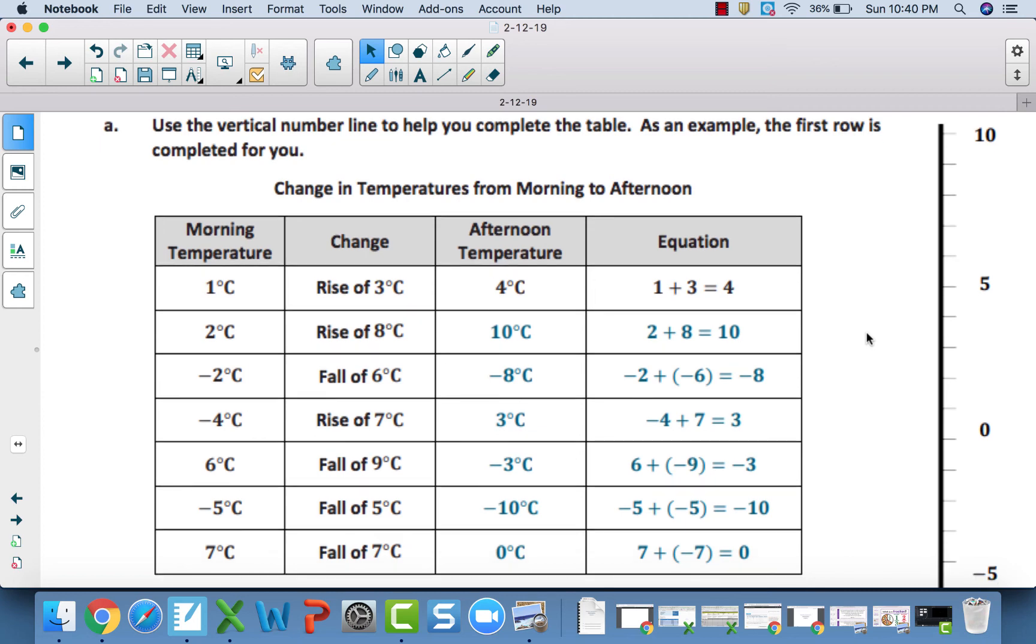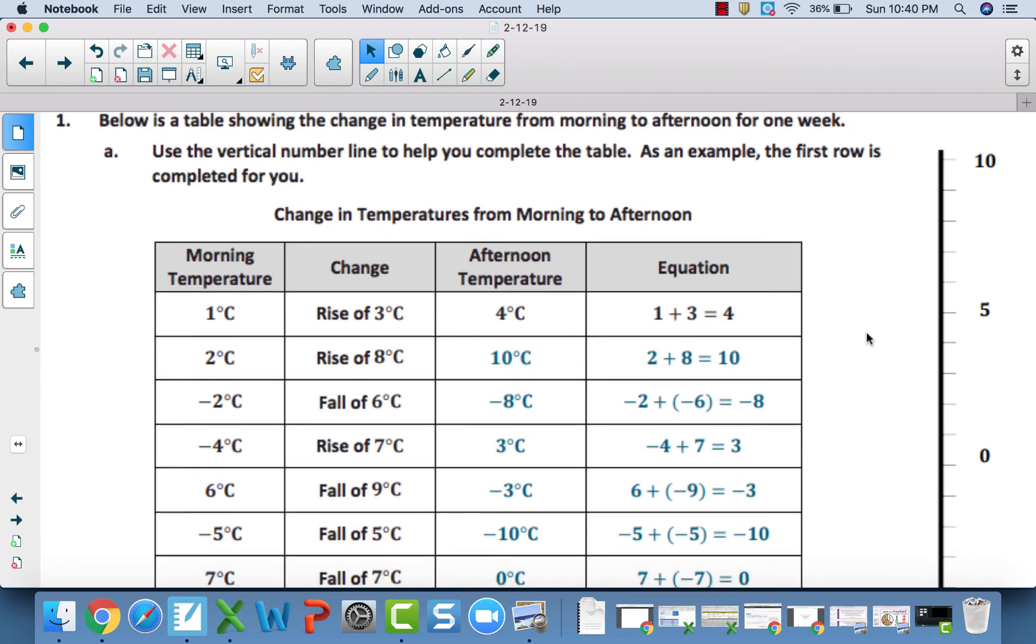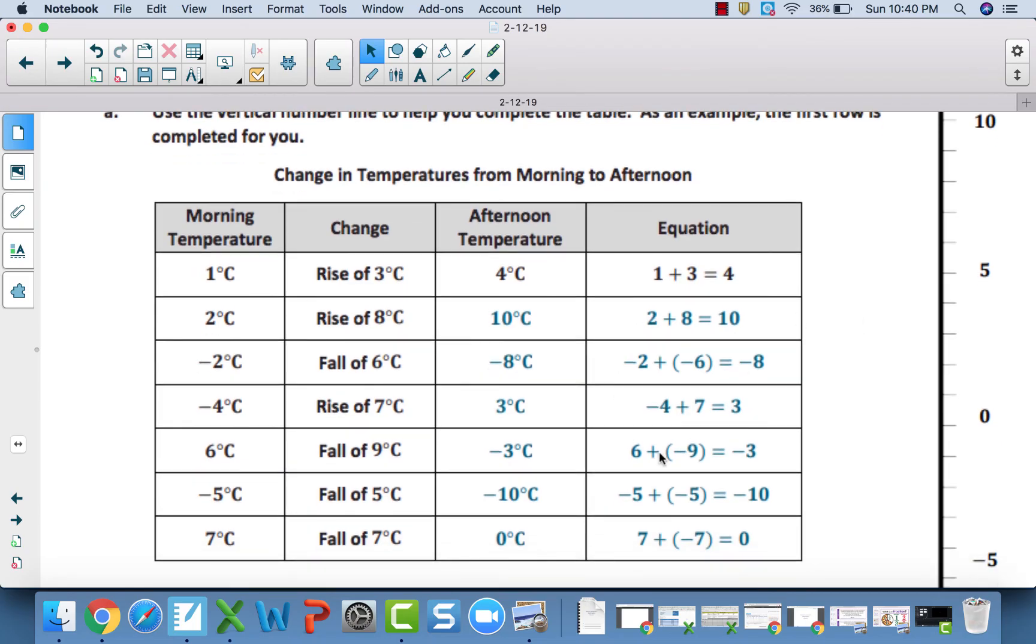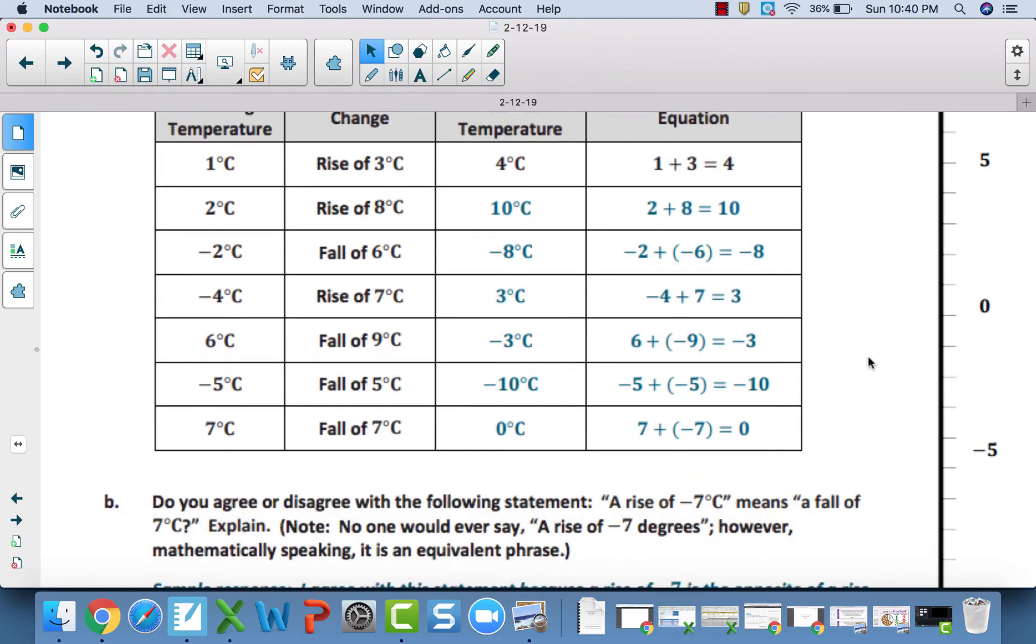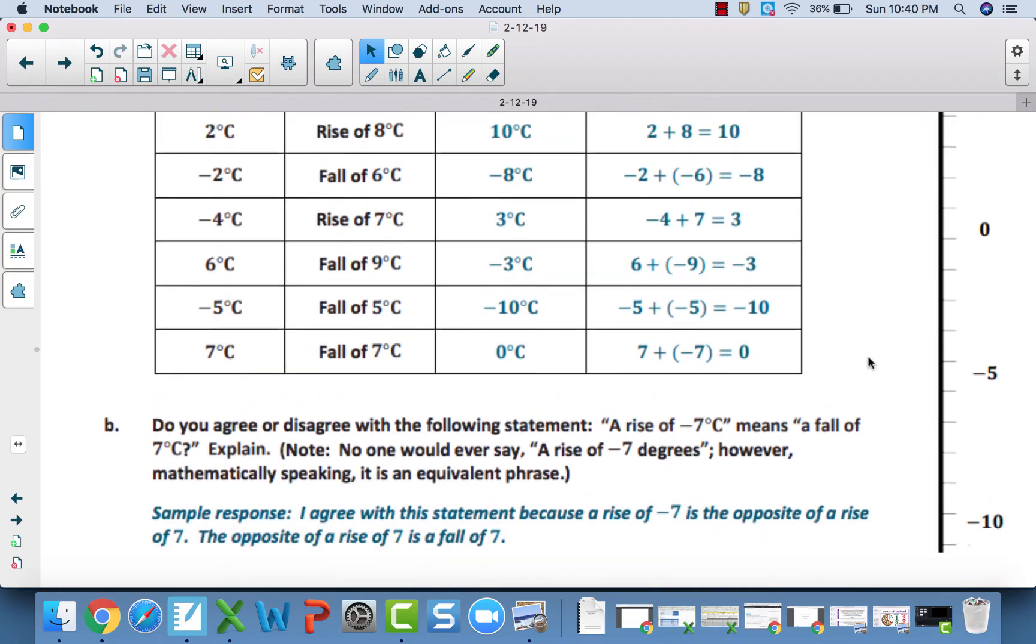With that said, here is the answer to problem set question 1a. Here is the table. A rise should have been represented by a positive and a fall, a negative. You can see the answers. The temperatures is essentially the sum of these two. And then our equation here. If you needed, you should have used this vertical number line to help you work through that.